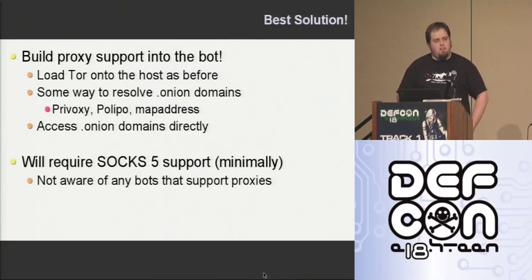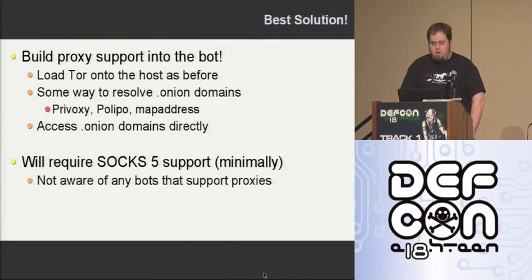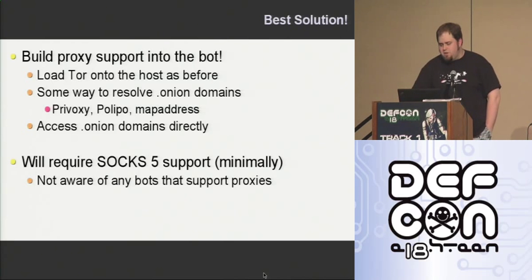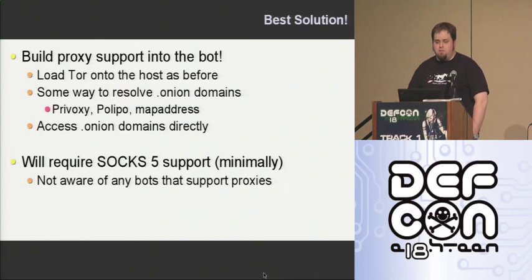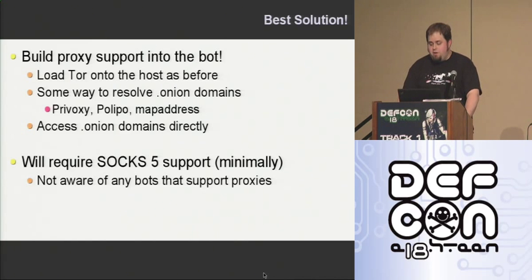There are a few ways you can resolve the onion domains. We would have to load Tor like we saw in the previous example. Tor provides a functionality called map address — I don't know if it's still considered an experimental option in Tor, but it was in all the documentation I saw. You can put into your config file the option map address, give it a local IP like 10.0.0.10 and the onion URL you want it to go to, and then you can just reference that local IP and go to it directly. So you don't need any kind of middleman to resolve the dot onion domains for you.